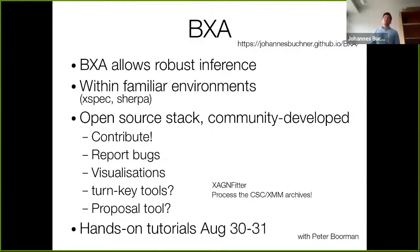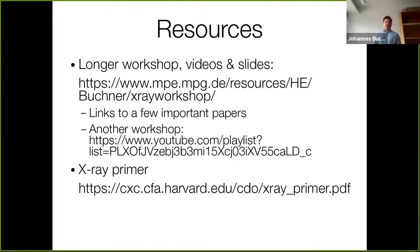On that point, BXA is a software package that is open source developed. It allows robust inference within environments that you're already familiar with. It's community developed. Please contribute, report bugs. It's currently lacking a bit on the visualizations end. We have some tools that are sort of turnkey for fitting AGN, heavily obscured AGN or mildly obscured AGN. You could develop your own tool for your own science case and process the archives. We'll have a tutorial on BXA in August, end of August, with Peter Boorman. There's some additional resources of previous workshops and there's an awesome x-ray primer on the CXC website. Thanks for that. We'll stop here and take your questions.